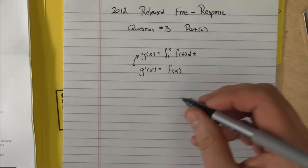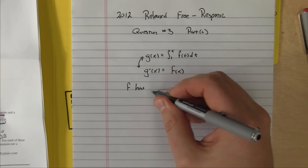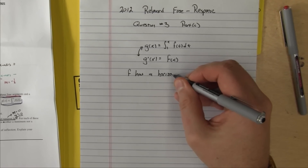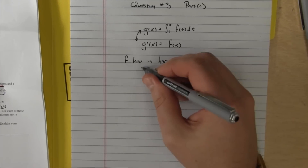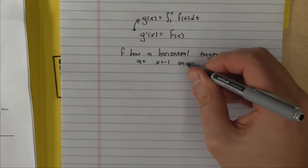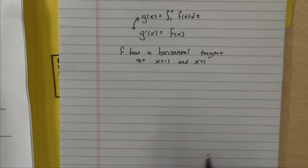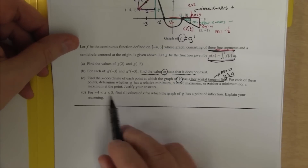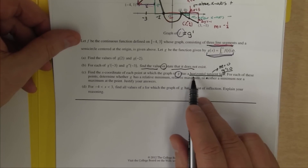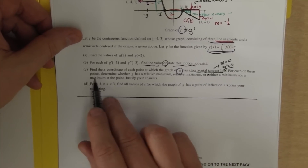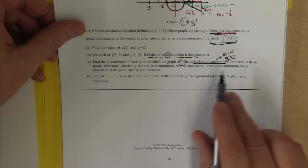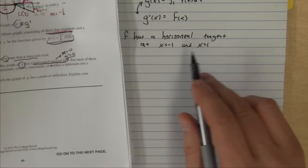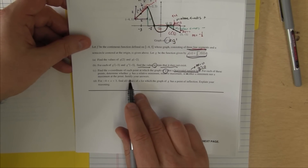So g has a horizontal tangent at x equals negative 1 and x equals 1. Those are the two points. Now our question has a lot of parts, so we need to be clear which part we're answering. For each of these points, determine whether g has a relative minimum, relative maximum, or neither. We need to give two answers since we found two points where there's a horizontal tangent, and we need to justify both of those.